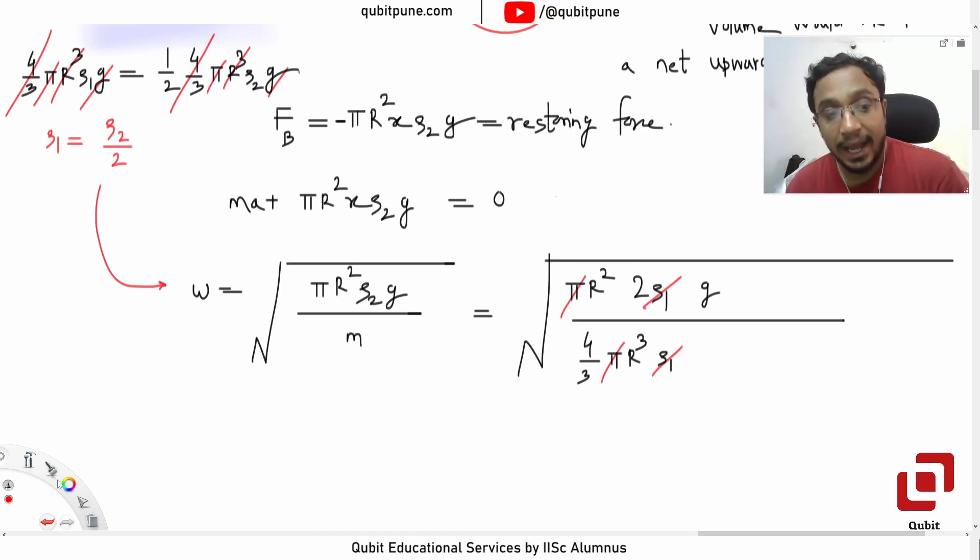π and π are getting cancelled. r² was there; it will entirely go, leaving you r in the denominator. So what will be ω? Inside the root: 2g/(4r/3) = (3/2)(g/r). So it will be 3g/2r.